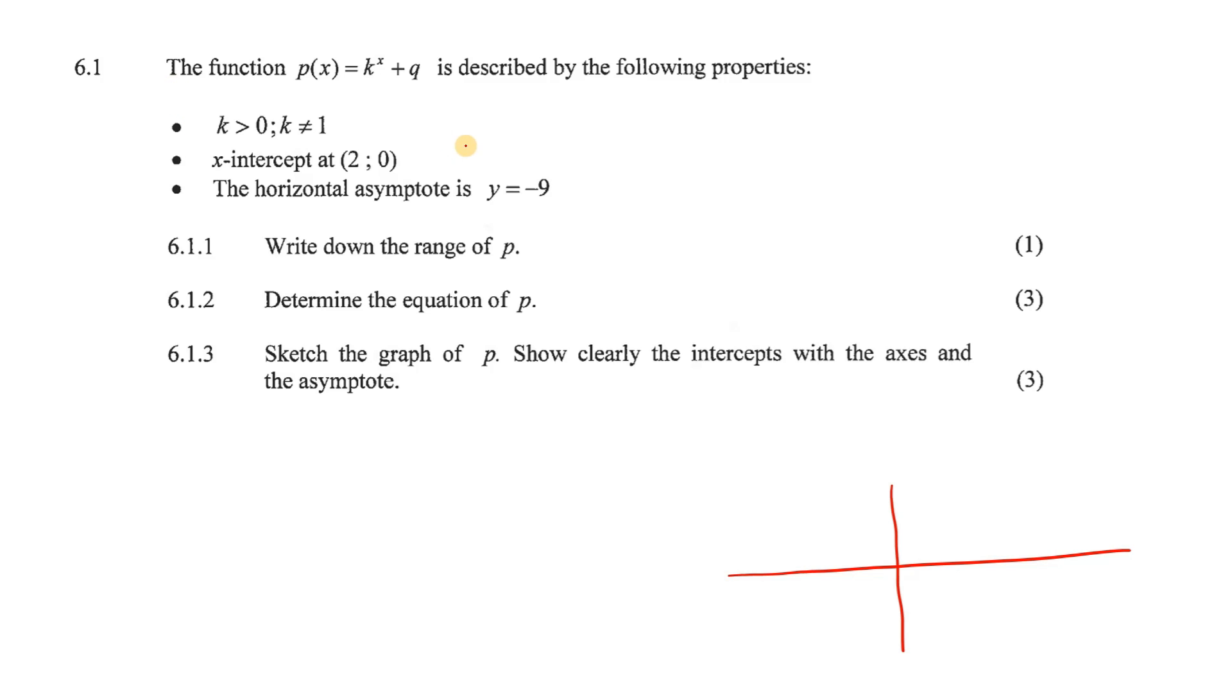And now they tell us that k is bigger than 0. The x-intercept is at (2, 0). So let's go plot that. 2 and 0 is here. And then the horizontal asymptote. Remember that these exponential graphs have these asymptotes. Remember the dotted line? And they're telling us that this one is at minus 9. The y is minus 9. So you go down until y is minus 9. And then there'll be an asymptote over there.